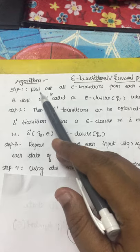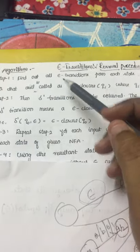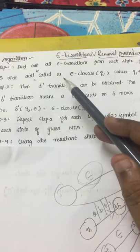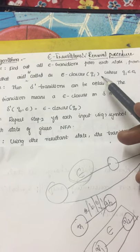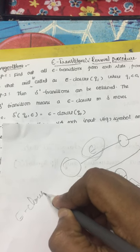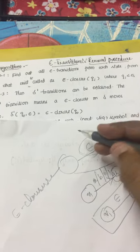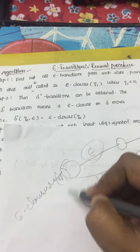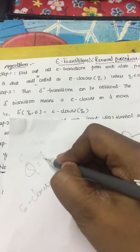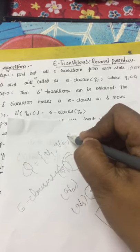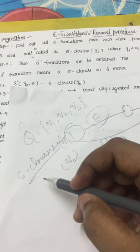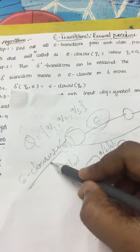In step 1, we find all the epsilon transitions from each state q — that will be called the epsilon closure of q. So for epsilon closure of q1, q2, q3: whatever states are present in the finite automata, for those states we need to find the epsilon closure value. Taking an example will help us understand epsilon closure in depth.